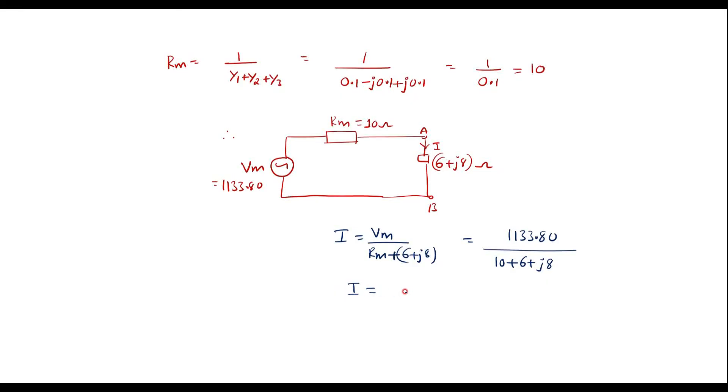Simplifying this we will get I is equal to 56.69 minus J 28.345 or in polar form we can get the result as 63.38 at an angle of minus 26.56 amps.